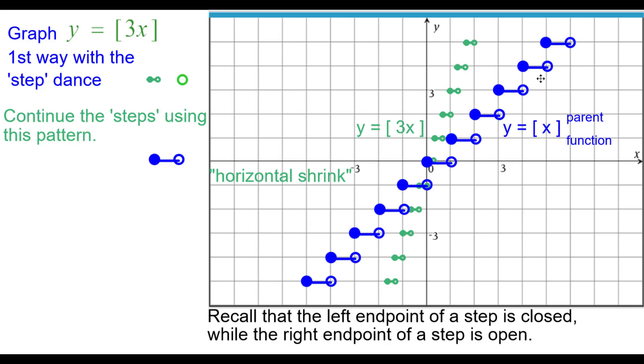Here we have the parent function plotted, and you can see that it is a horizontal shrink from blue to green. We'd also like to point out that you should notice that the greatest integer of 3 times x is different from 3 times the greatest integer of x. When we did this before, the steps were 3 units apart, and the width was still 1. This is a different 3 altogether.